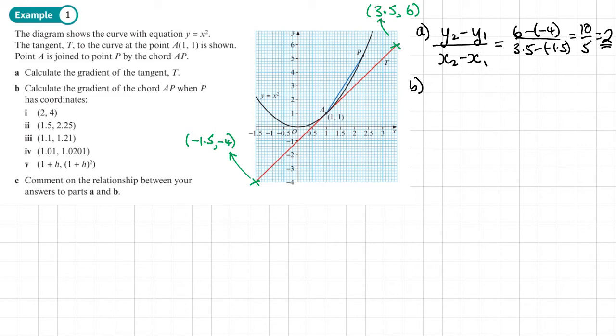In part b, it says calculate the gradient of the chord AP - that's that blue line - when P has coordinates. The coordinates of P are changing. They start at (2, 4), and then each of the coordinates change and they get closer and closer to A. So we're looking at a shorter and shorter line for this chord.